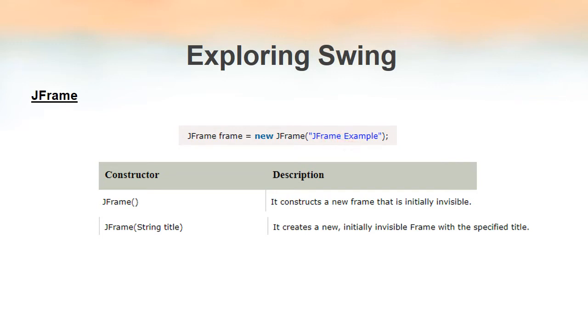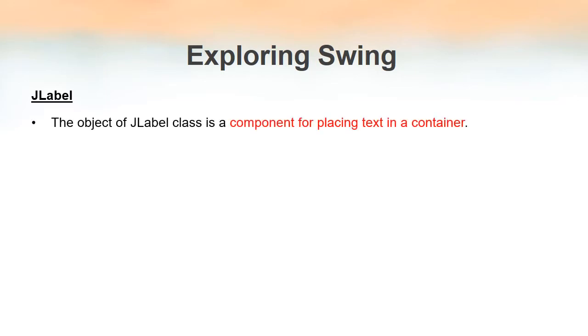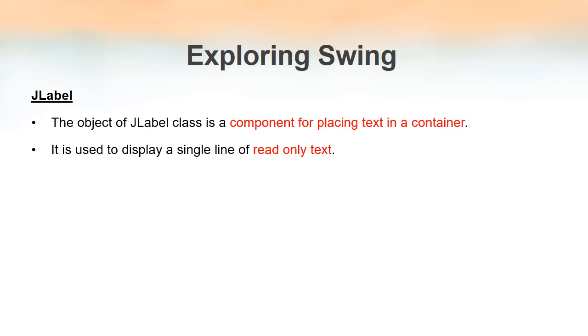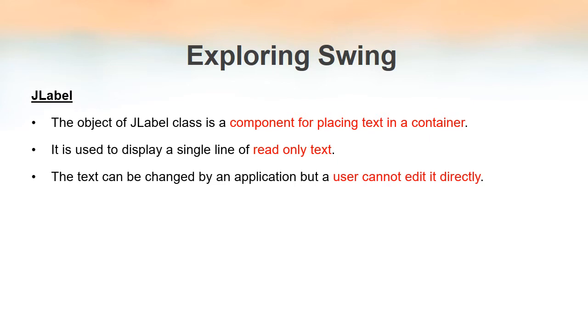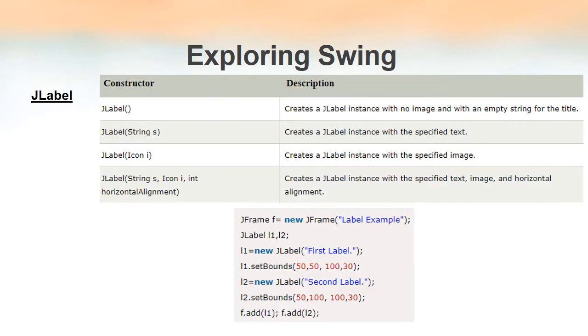The next commonly used class in the Swing package is JLabel. JLabel is a component for placing text in a container. If you want to add text to a JFrame, you use JLabel. JLabel generates read-only text — it is a single line of read-only text. The text created by JLabel can be changed by the application but cannot be changed directly by the user.